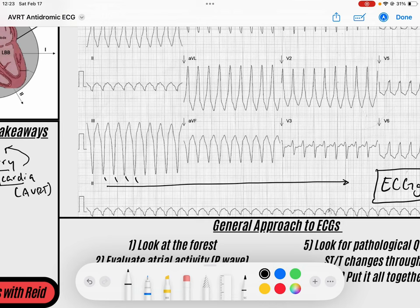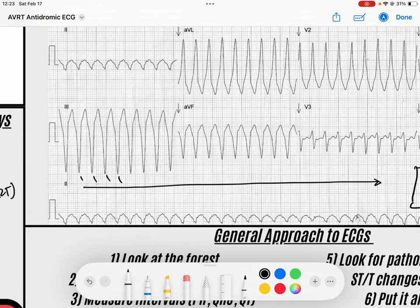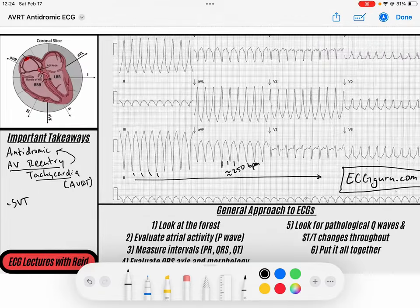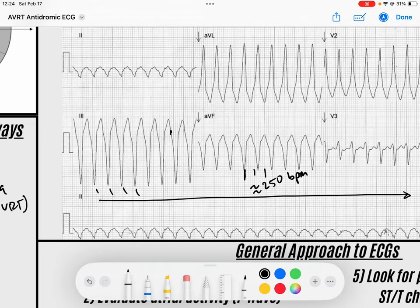The rate here is somewhere, if I find a QRS that lands on a solid line, maybe this one, you can see it's 300, 150. It's very fast approaching 300. I would say maybe 250 or so beats per minute. So this is very fast, regular. And if you notice, it's a wide complex rhythm.